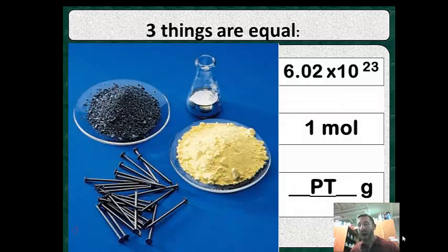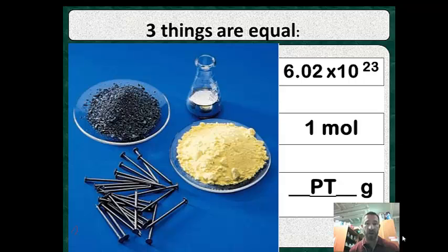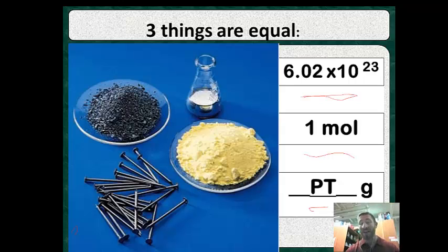So why are we doing all this? Why do we keep changing things to moles? I want to emphasize a couple things. All these things are equal in three ways: they have the same number of particles, they're all a mole, and their mass may be equal from the periodic table. But what is different is their masses — atoms weigh differently.